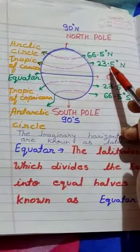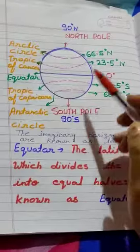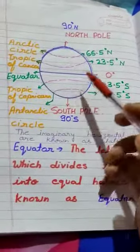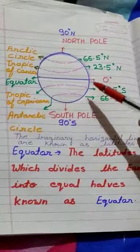This is the equator. The equator is the latitude which divides the earth into two equal halves.